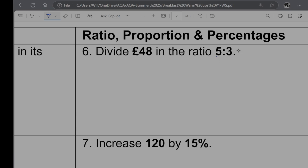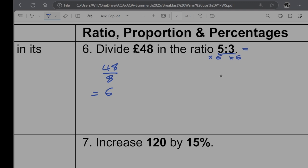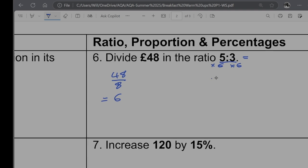So that means that we've actually got 8 parts to the ratio. So I'm going to go 48 divided by 8 is going to be equal to 6. So I want to times each of these by 6. So times 6, times 6. So 5 times by 6 would give me 30, and 3 times by 6 would give me 18. I'm just going to include my pound symbols on both of those.